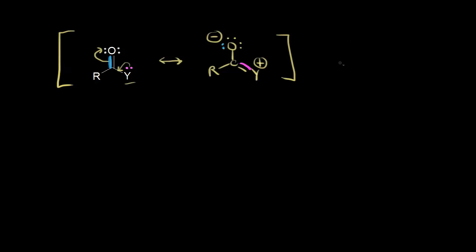When thinking about the carbonyl in the hybrid, resonance is decreasing the double bond character of the carbonyl, so you're decreasing the strength of the carbonyl. Decreasing the carbonyl strength decreases K, which decreases the wave number where you find the signal and decreases the frequency of bond vibration. That's the idea of resonance.